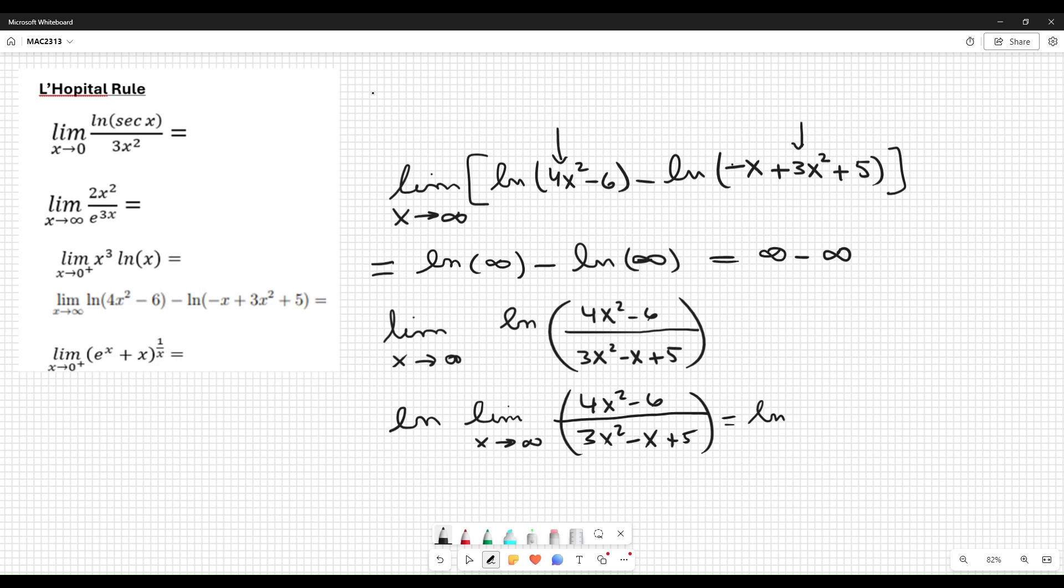This is 4x squared minus 6 over 3x squared plus x plus 5. You apply the dominant idea. The dominant is 4x squared over 3x squared. This square is cancelled and we get logarithm of 4 over 3. That's the answer.